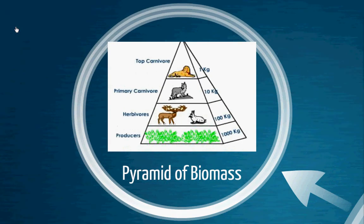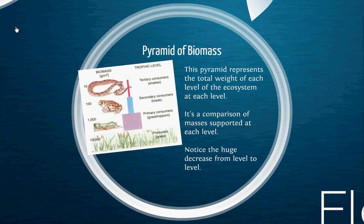Now, those are not the only pyramids we're going to talk about — those are the only ones you have to remember any complicated math for. This is a pyramid of biomass. Biomass represents the total weight of each level of the ecosystem; it compares the masses that each level supports. The big thing you need to notice is the humongous decrease from level to level. The producers have 10,000 grams per meter squared — think of taking a 1-meter-by-1-meter square of grass and weighing it. The big thing to know is that each level you go up, there's less and less biomass. This is the case most of the time in a terrestrial, on-land ecosystem.